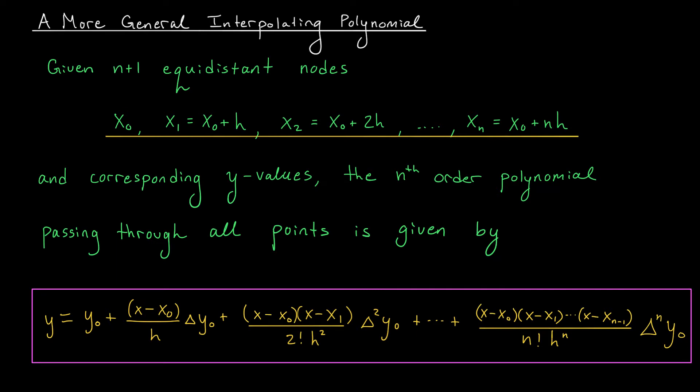I'll start at x0, and to keep the nodes equidistant, equally spaced, I'm going to add a constant h each time. So I go from x0 to x1 by adding an h, I go from x1 to x2 by adding another h, and so on. We keep going until we get to the end. So now that we have our n plus 1 data points, the question is, what's the nth degree polynomial that passes through all of them?